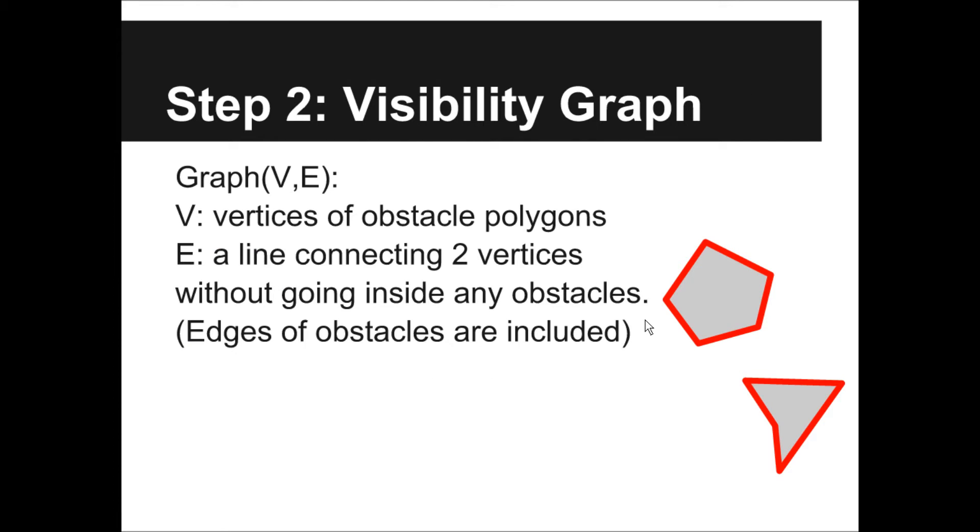Then, we can construct our visibility graph with the polygons. The visibility graph is a graph where nodes represent the vertices of the polygons. An edge between two nodes exists if and only if the straight line connecting the two vertices does not intersect with obstacles. Note that the edges of the obstacles also satisfy this condition. I use red color to highlight them.